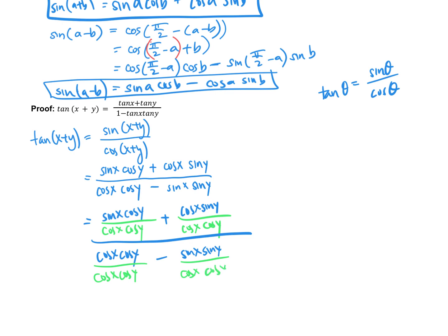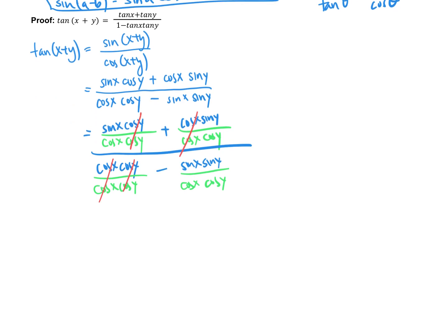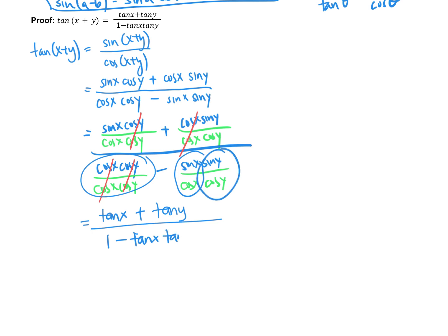Dividing every term by cosX·cosY: in the numerator, cosY cancels to give sinX/cosX = tanX, and cosX cancels to give sinY/cosY = tanY. In the denominator, cosX·cosY divided by itself equals 1, and the last term gives sinX·sinY/(cosX·cosY) = tanX·tanY. So tan(x + y) = (tanX + tanY)/(1 − tanX·tanY). We could do the exact same thing for the subtraction version. And that's it for proving all of our compound angle formulas.